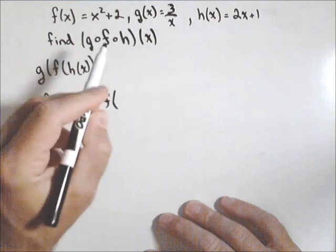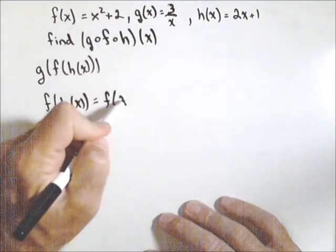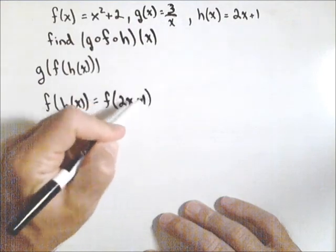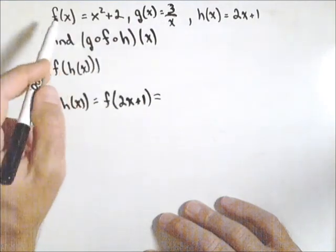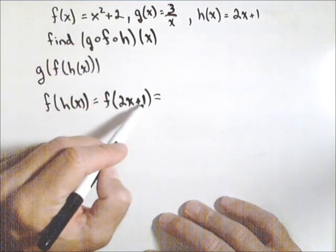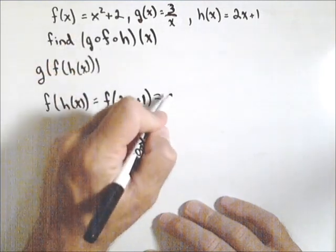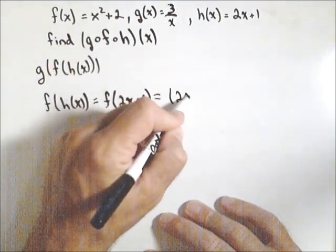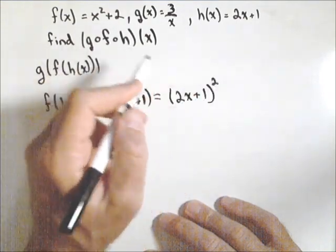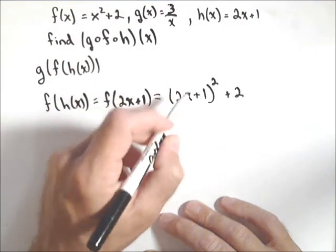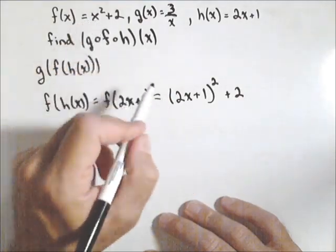Now we know that f of h of x is two x plus one, so that means in f, any place there's an x, we're putting two x plus one. So that gives us two x plus one, quantity squared, plus two. We replace the x with two x plus one.